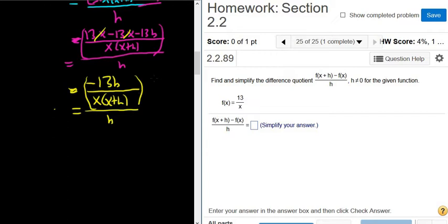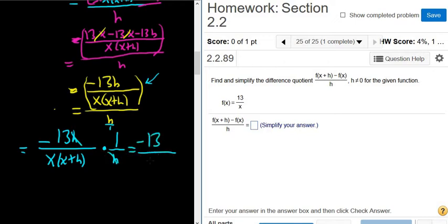We have this whole thing here, and it's being divided by h. When you divide by h, you really multiply by the reciprocal. So this will be equal to negative 13h over x times x plus h, times the reciprocal of h, which is 1 over h. The h's cancel, and so we end up with negative 13 over x times x plus h.